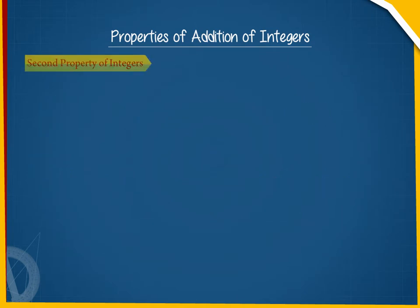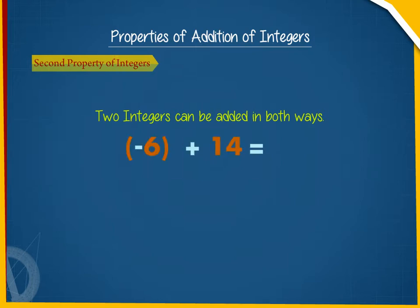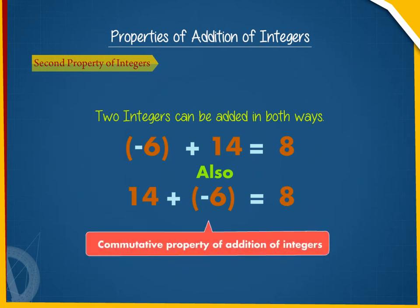The second property says that two integers can be added in both ways. For example, minus 6 plus 14 is equal to 8. Also, 14 plus minus 6 is equal to 8. This is known as the commutative property of addition of integers.